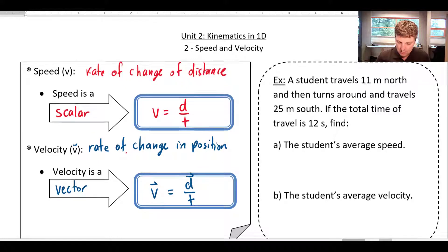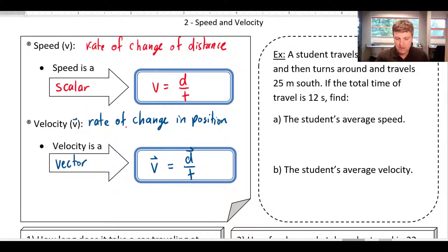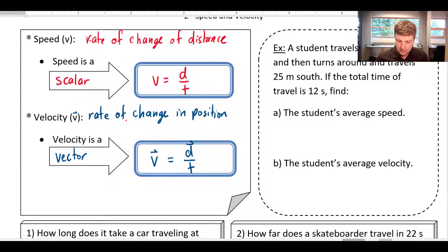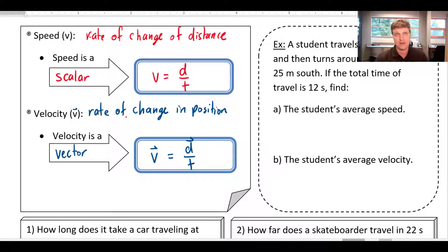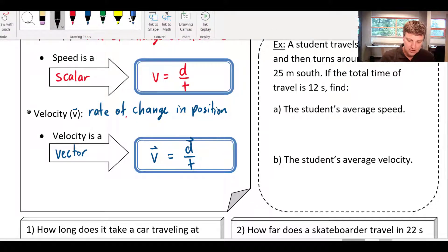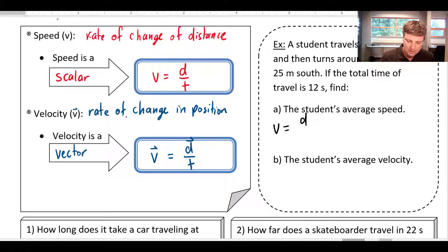So if we look at an example here, a student travels 11 meters north and then turns around and travels 25 meters south. If the total time of travel is 12 seconds, find their average speed and their average velocity. The speed is just going to be the distance traveled divided by the time it took. The distance traveled is they went 11 meters and then they also went 25 meters and they did that in 12 seconds.